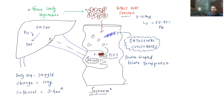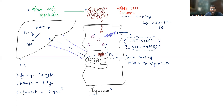To summarize the absorption pathway: polyglutamate forms in food are converted to monoglutamate forms by intestinal conjugases, then absorbed into jejunal epithelial cells via proton-coupled folate transporters, converted to 5-methyltetrahydrofolate, taken up into the liver, and from there into systemic circulation. The predominant plasma form is 5-MTHF, which must be converted to tetrahydrofolate by vitamin B12 for active use. Daily requirement is 100 micrograms and storage lasts 3 to 4 months.